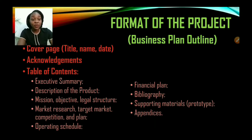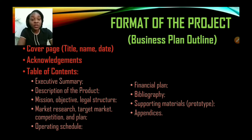Let us look at the format of the project, or we could say the format of your business plan. You must have your cover page, and that must have the title, your name, and the date. Next, you'd have acknowledgments. The parts of the table of contents should include: executive summary, description of product, mission, objective and legal structure, market research, target market, competition and plan, an operating schedule, financial plan, bibliography, supporting materials and appendices. In this video, we'll look at each component in detail — what is required of you and the marks allotted for each part.